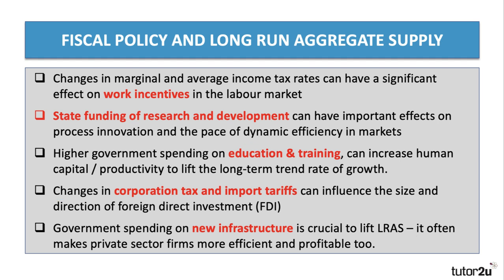Now, what about fiscal policy and long-run supply? This is an important connection to understand in your revision — have a couple of good examples for your notes. The impact on long-run aggregate supply is a slow burner, but fiscal policy can have quite significant and pervasive effects.